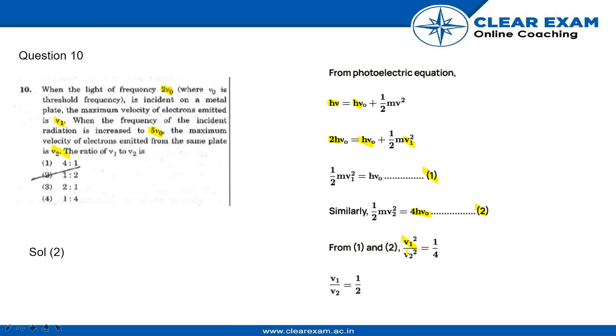get V₁²/V₂² = 1/4. Taking square root on both sides, we get V₁/V₂ = 1/2, or V₁:V₂ = 1:2. Therefore, the correct answer is option 2.